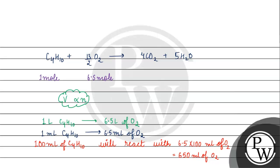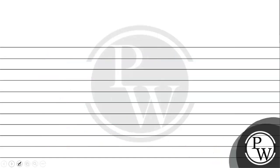100 ml butane will react with 650 ml of O2. If we have this volume of O2, then volume of air is basically 5 into volume of oxygen. Volume of oxygen is 650 ml, so 5 into 650 gives us 3,250 ml, which is 3.25 liters.